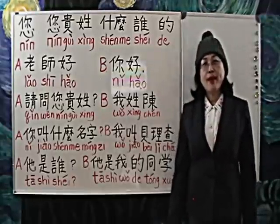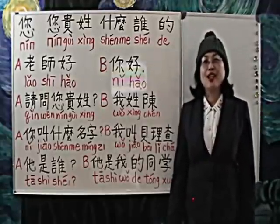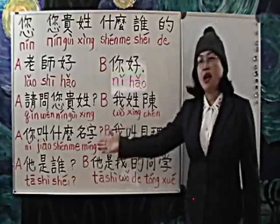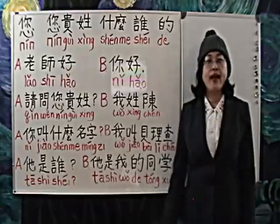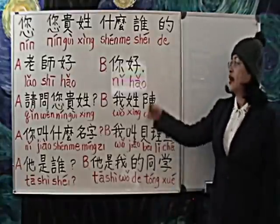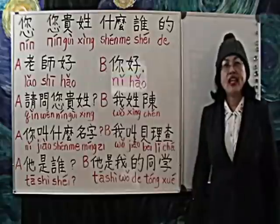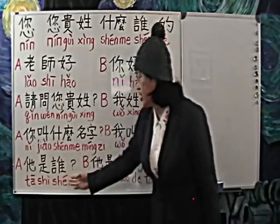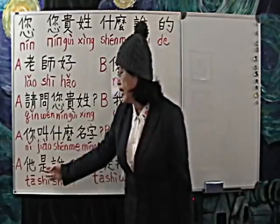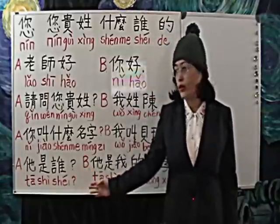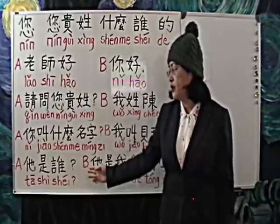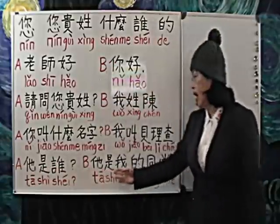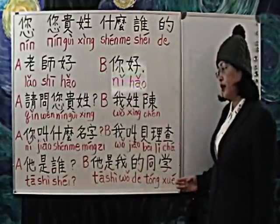Second, 什么 can be used as a modifier of a noun, to ask what kind of thing something is. For example, 你叫什么名字? Next, 谁. 谁 is an interrogative pronoun. Remember, the word order for question sentences never changes. For example, 他是谁? — He is who? 他是谁?